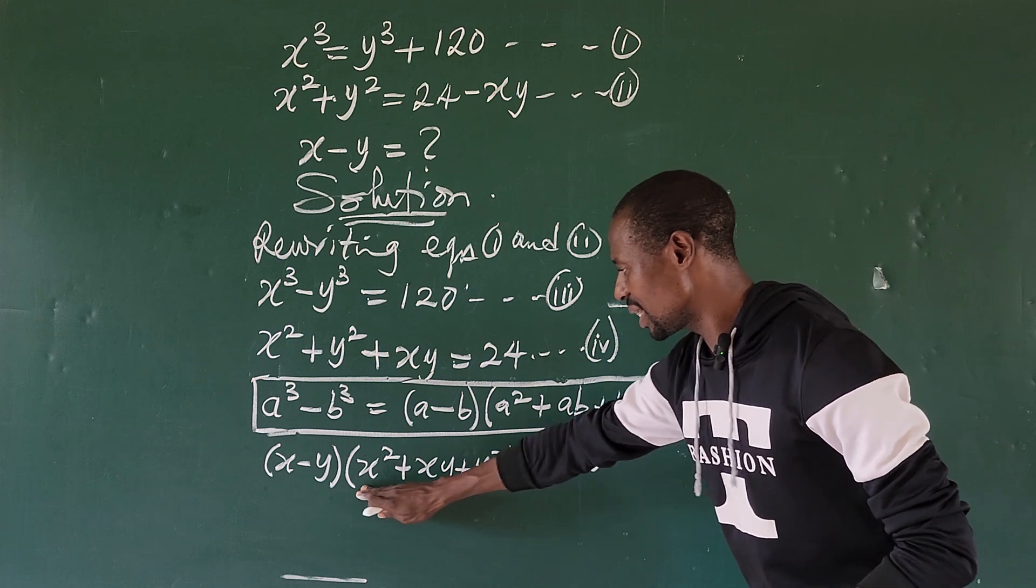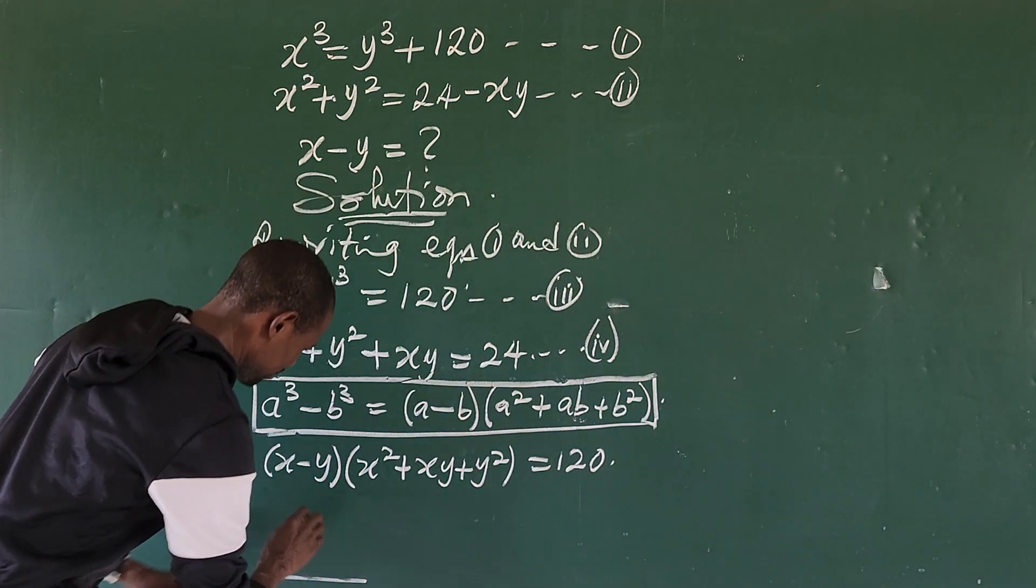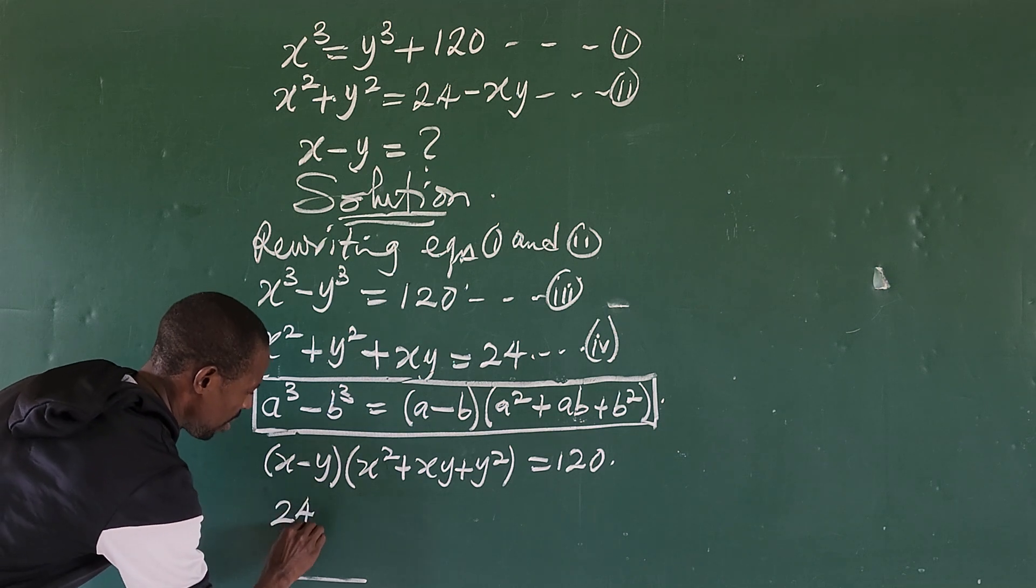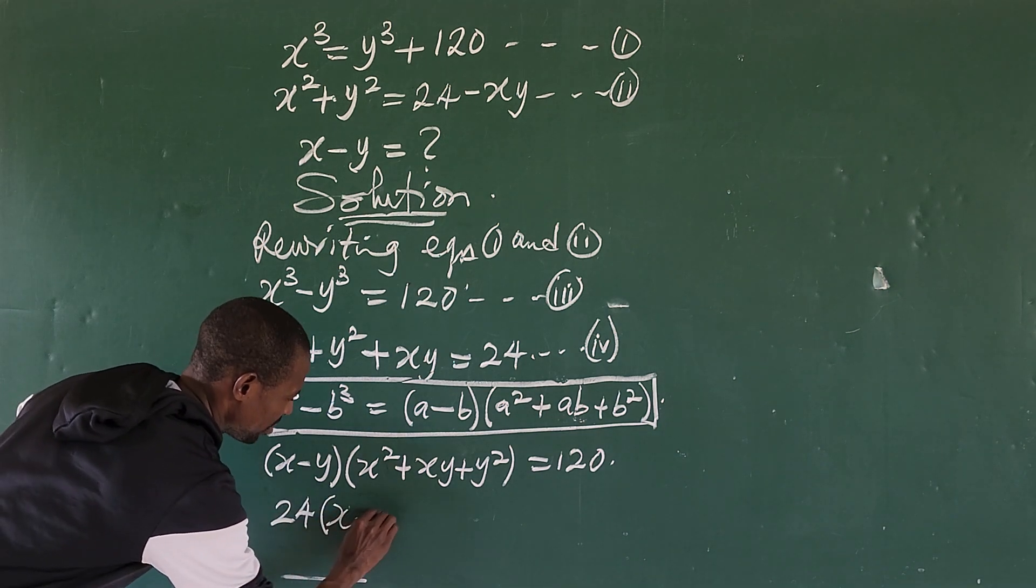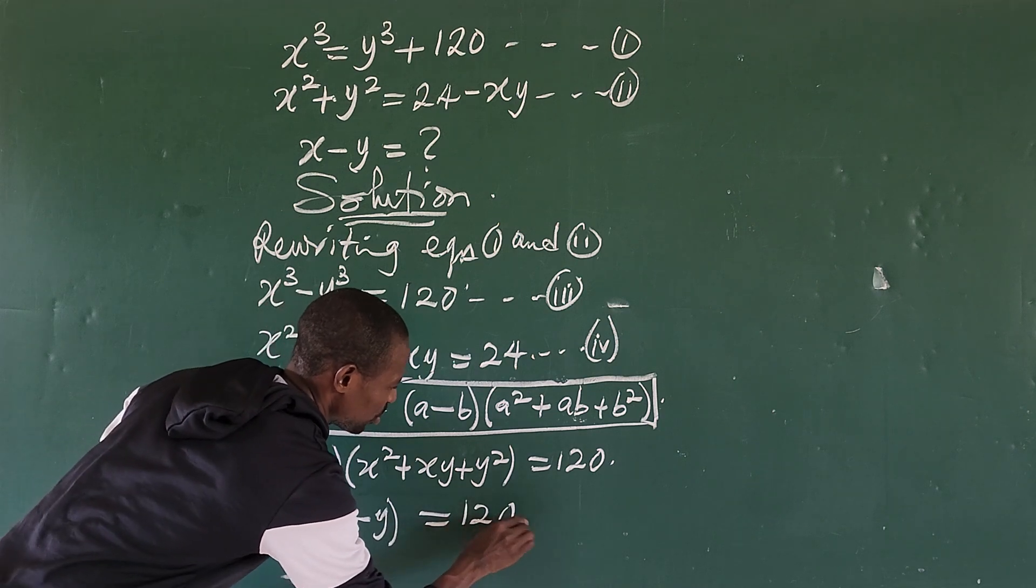This gives us 24(x - y) equals 120. Mathematics is very easy.